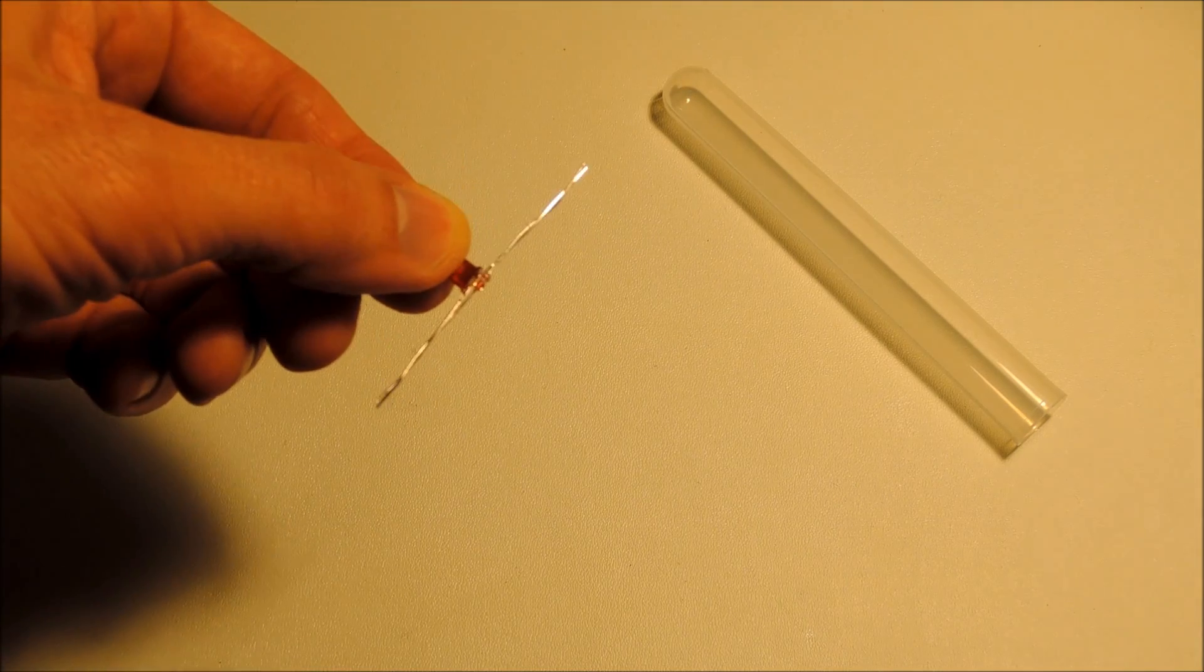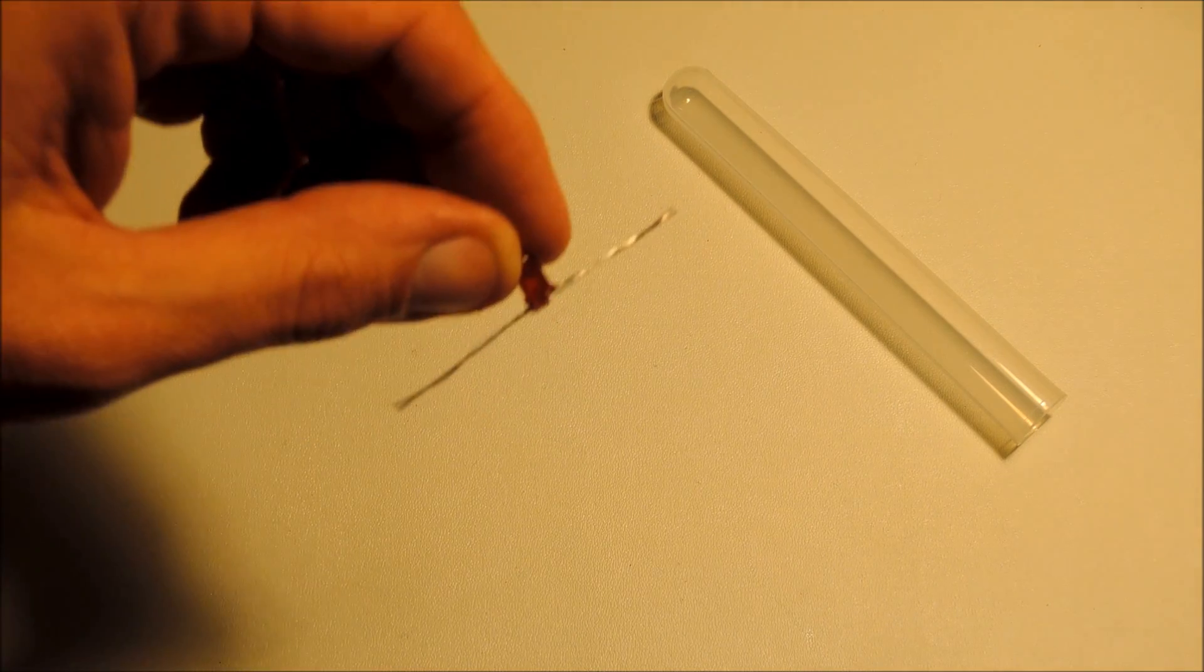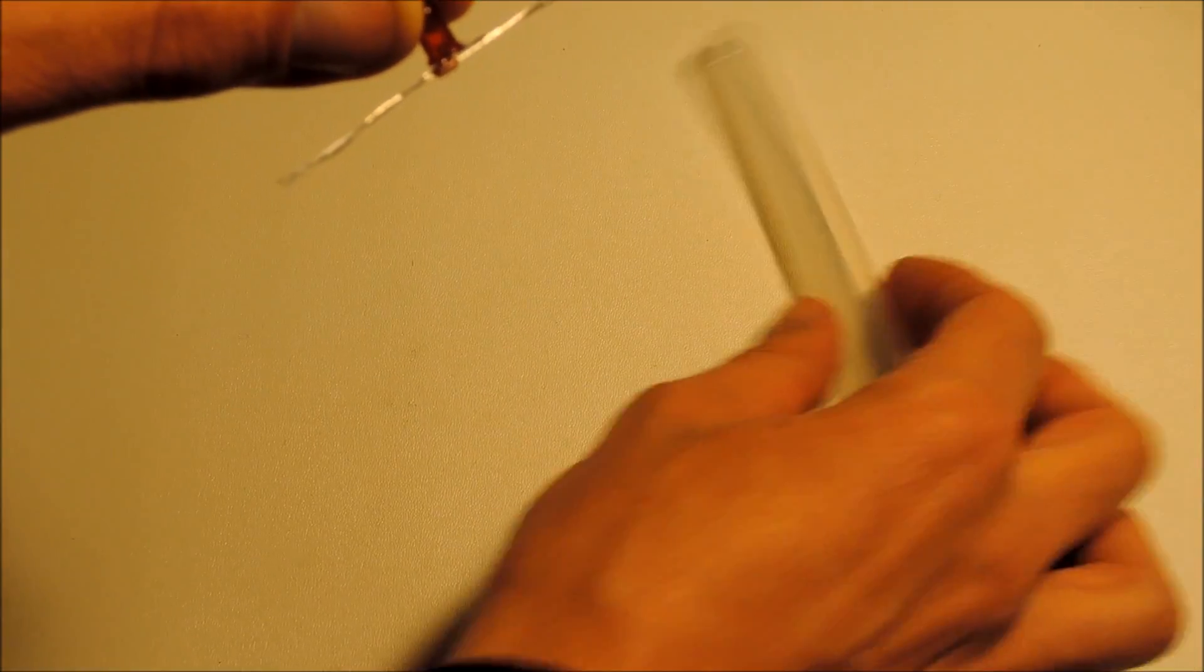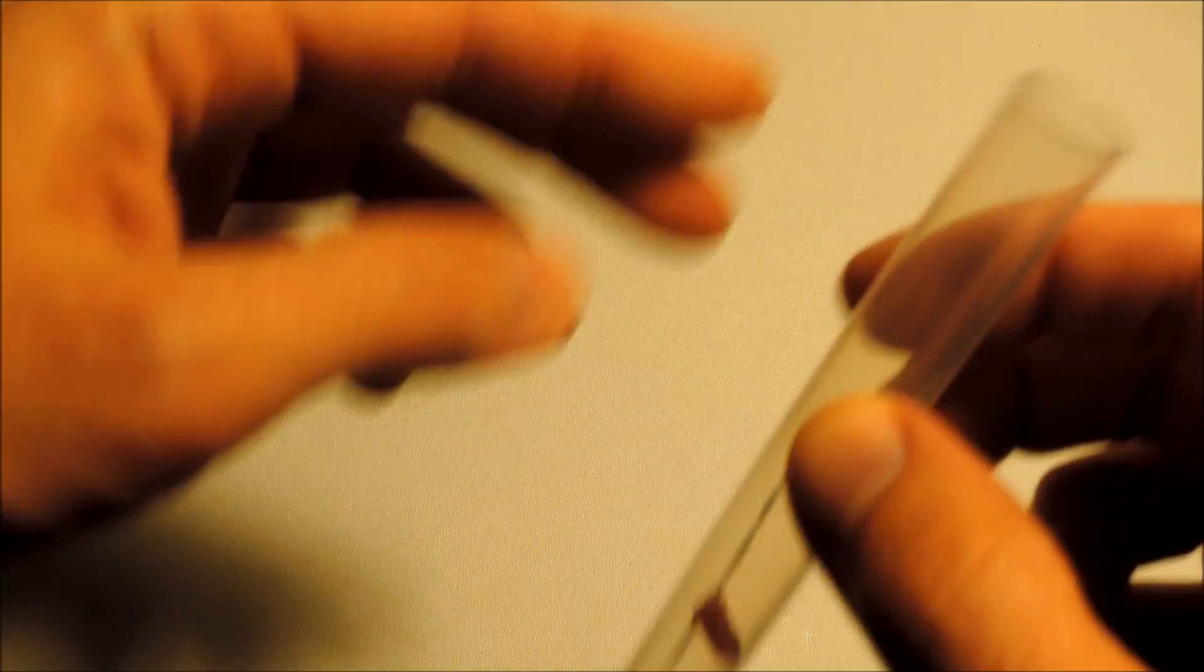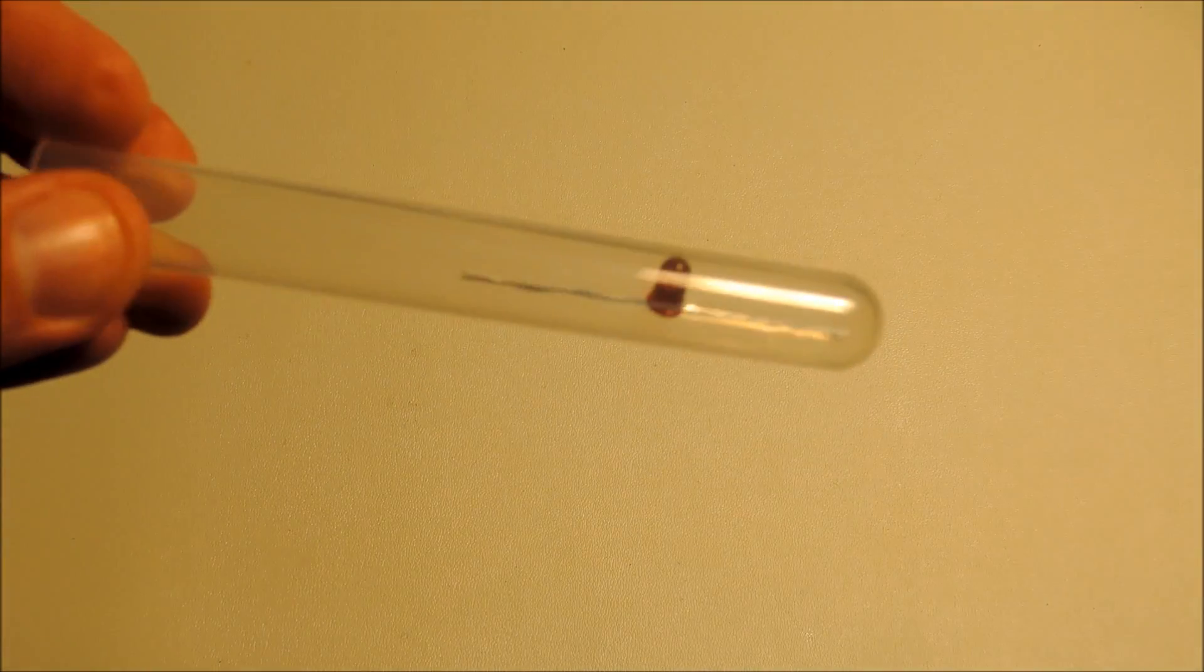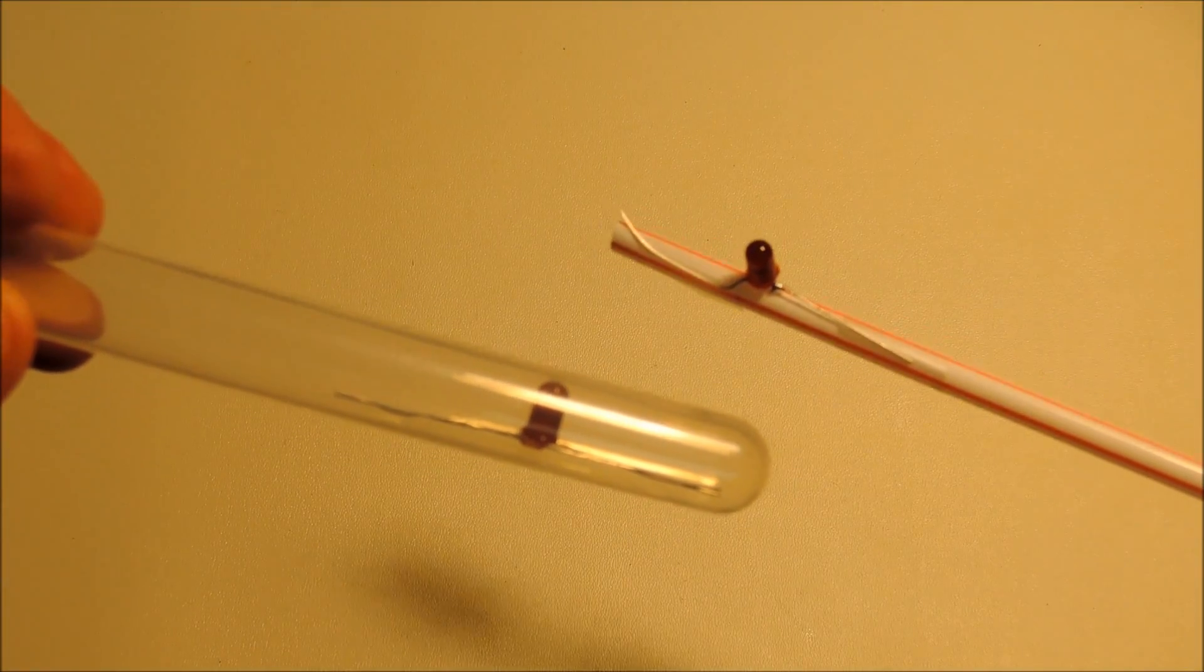And then the rectenna won't work very well if you're touching any of the metal parts and you probably want to see the LED light up. So what you can do is you can take it and stick it inside something that doesn't conduct, like a plastic test tube. Or you can also take it and tape it to a straw or something like that.